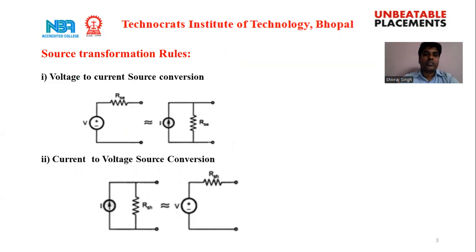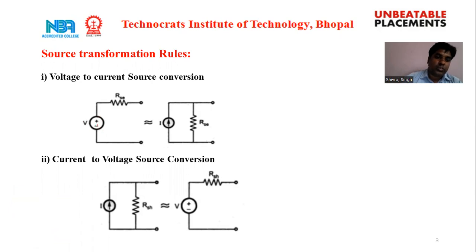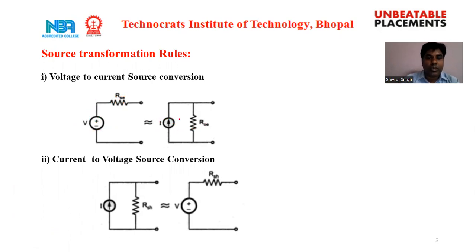There are some rules by which we can solve electrical systems for analysis. The first rule is voltage to current source conversion. In this circuit diagram, a voltage source with series resistance R is converted into a current source. The voltage V and resistance R are replaced by a current source where I equals V divided by R, with the resistance connected in parallel.